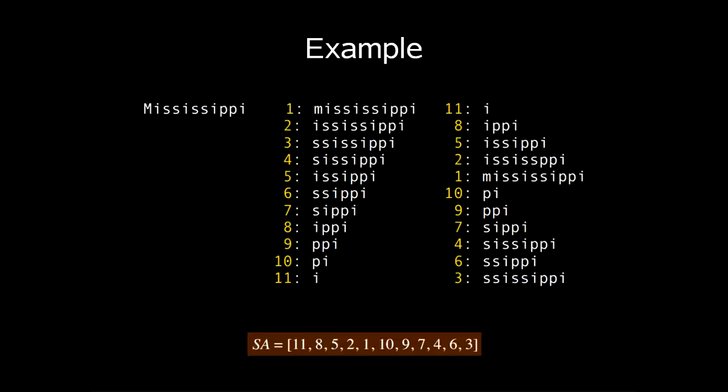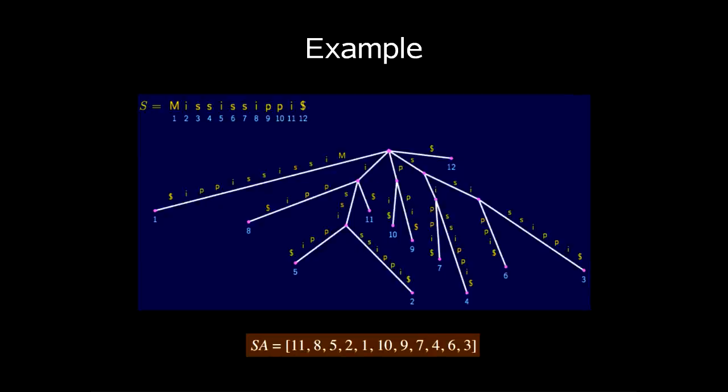So how does this look in a suffix tree? In this example we see that the leaves in a subtree correspond to an interval in SA. So for example 8 to 11, meaning index 8 to 11 in our SA array.